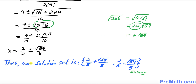Our solution set turns out to be 2/5 plus the square root of 59 divided by 5, and 2/5 minus the square root of 59 divided by 5, using the positive and negative signs respectively. That is our answer. Thanks for watching, and please subscribe to my channel for more exciting videos.